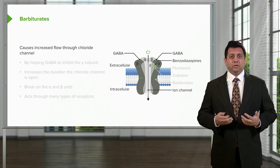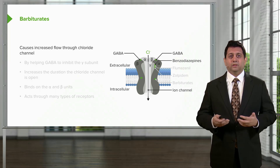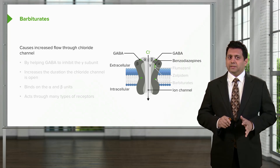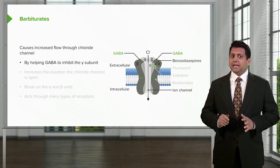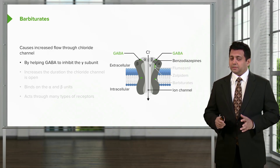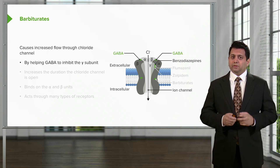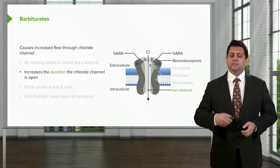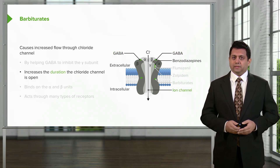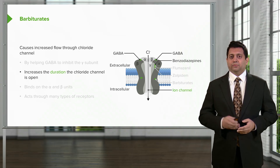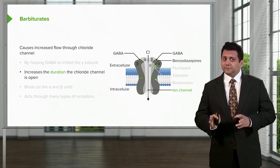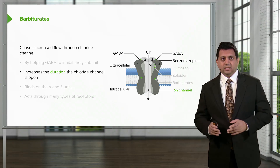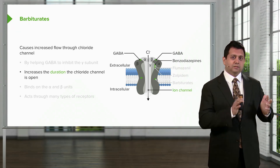Barbiturates also cause increased flow of chloride through the channel, but it does so a little bit differently than benzodiazepines. It helps GABA to inhibit the channel, and it increases the duration of chloride flow through the opening. That's different than the benzos — the benzos increase frequency, while barbiturates increase duration.